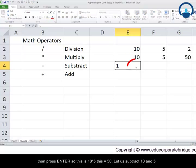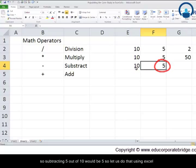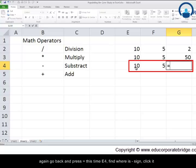Let us subtract 10 and 5. So subtracting 5 out of 10 would be 5. So let us do that using Excel. Again go back and press equal to. This time E4. Find where is the minus sign. Click it and choose F4 and press enter.